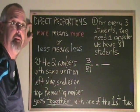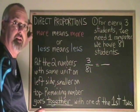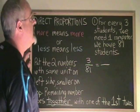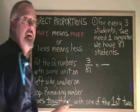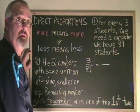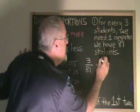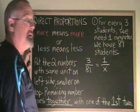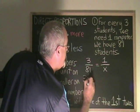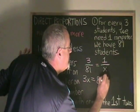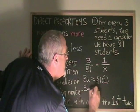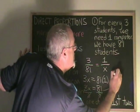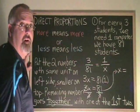Putting the smaller number on top is the same — I always do it that way and I make fewer mistakes that way. The next step is the remaining number goes together with one of the first two. We can see that for every three students we need one computer, so three students and one computer go together. Since the three is on top, I'm putting the one on top as well. I put the x in the last remaining place and then use the fundamental rule: I cross-multiply and solve. 3 times x equals 81 times 1, which simplifies to 3x equals 81.